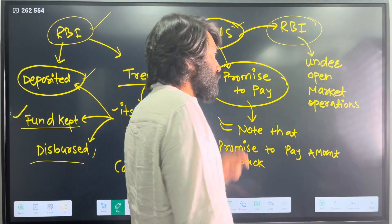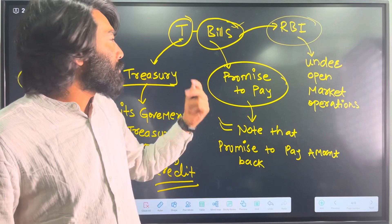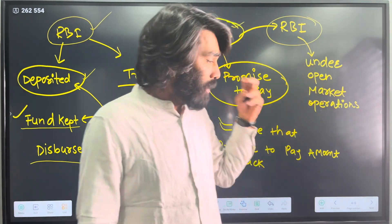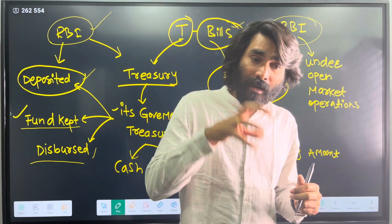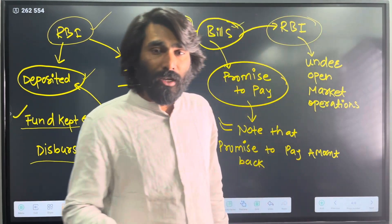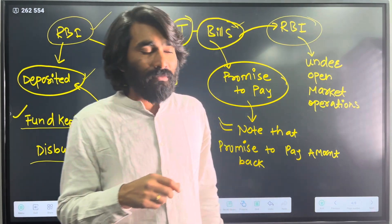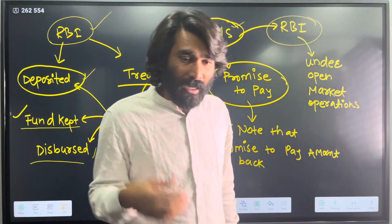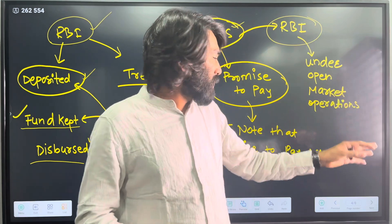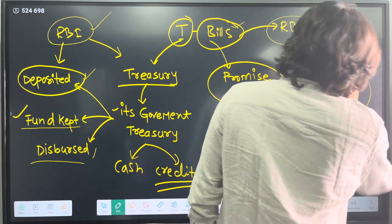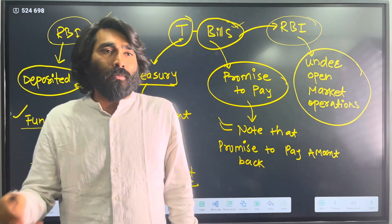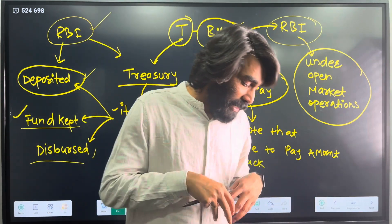Now, how does RBI manage T-bills? Government ministries and departments send a notice to the RBI to help issue T-bills in the market, because RBI is the bank of banks and maintains many accounts. The government ministry sends a notification or government resolution (GR) with value propositions and details. Based on that, RBI's research departments work on it and open a T-bills scheme under Open Market Operations, issuing bills on different platforms so that people can buy them.